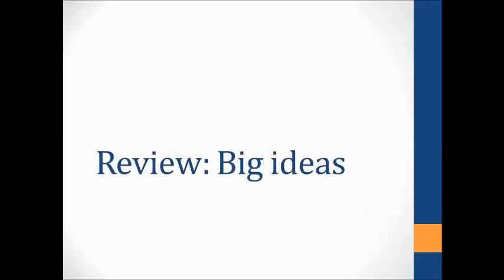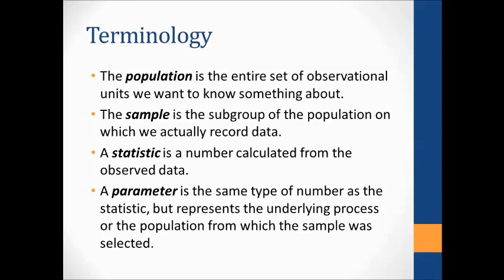Here's a review of the big ideas. Some terminology: a population is the entire set of observational units we want to know something about, and a sample is a subgroup of that — hopefully a random sample so we can infer back to the population. A statistic is a number calculated from observed data, like a sample mean or proportion. A parameter is that same type of number — a mean or proportion — but it represents the entire population or the underlying process. Statistic goes with sample; parameter goes with population.